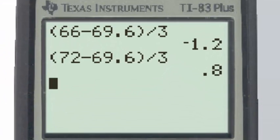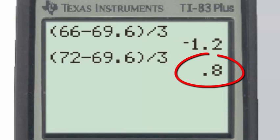We'll use the z-score formula to find the z-scores for 66 and 72 inches. Doing so, the z-scores are negative 1.2 and 0.8 respectively. We will adopt the convention that z-scores will be rounded to two decimal places and the area, or probability, rounded to four decimal places unless otherwise specified.